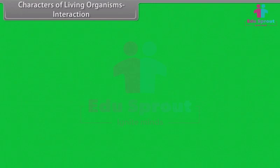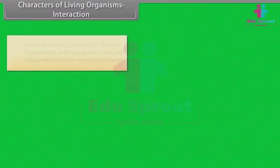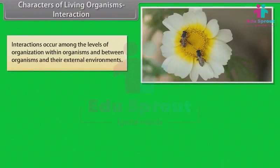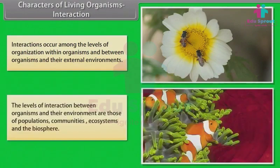Interaction: Interactions occur among the levels of organization within organisms and between organisms and their external environments. The levels of interaction between organisms and their environment are those of populations, communities, ecosystems and the biosphere.